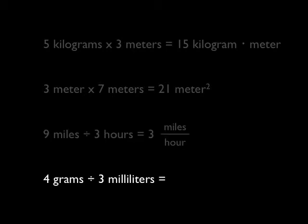Finally, let's look at 4 grams divided by 3 milliliters. 4 divided by 3 is going to be 1.3 repeating. So we can round that off to 1.34. Grams divided by milliliters would just be written as grams divided by milliliters. Or, using our fraction notation, we could say grams per milliliter. And that is all there is to it.